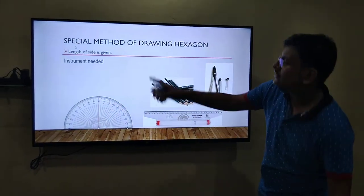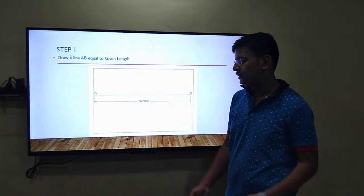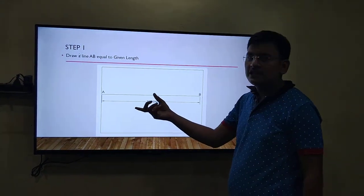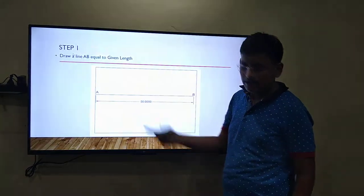We will discuss the first method for drawing a hexagon. First of all, draw a line AB of given length. So, here we are taking 50mm of length.